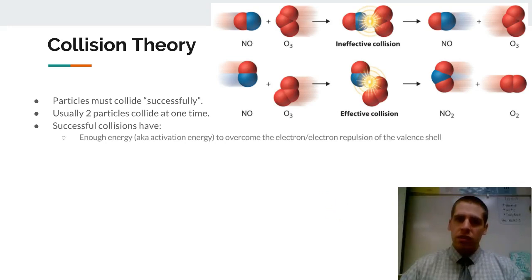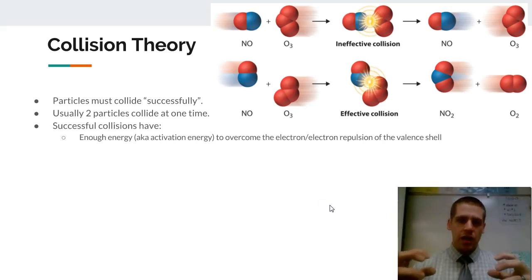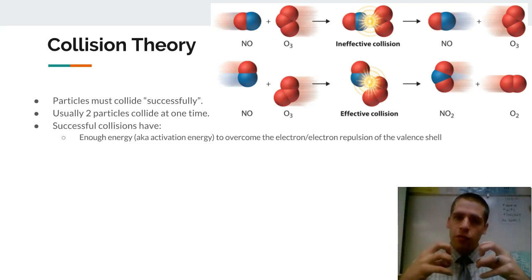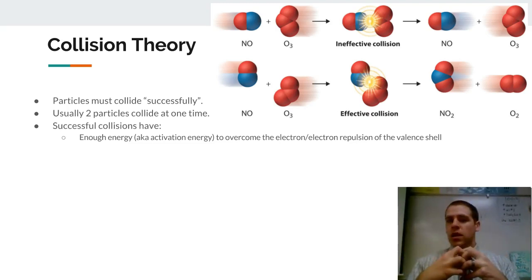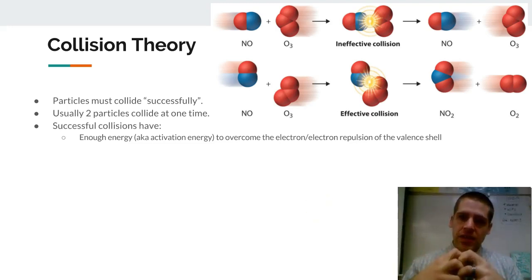The criterion for successful collisions is that they have enough energy. They have to overcome that initial electron repulsion, because each atom has its valence shell. In order for them to form a bond and release energy, their electrons have to overlap. So they have to get past that initial repulsion of the valence shell.